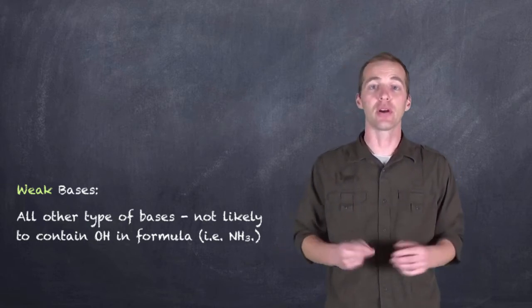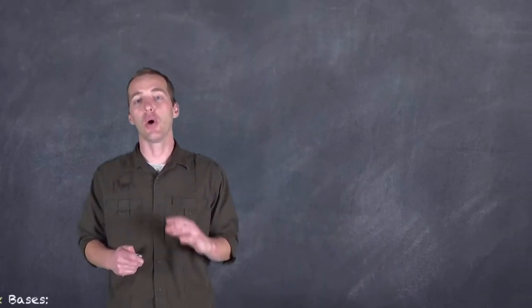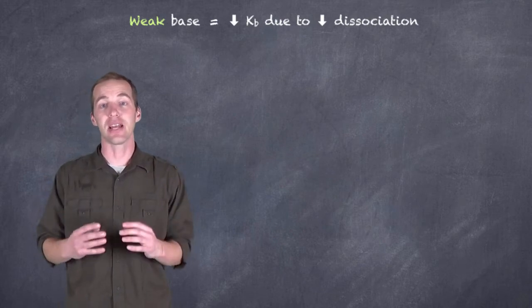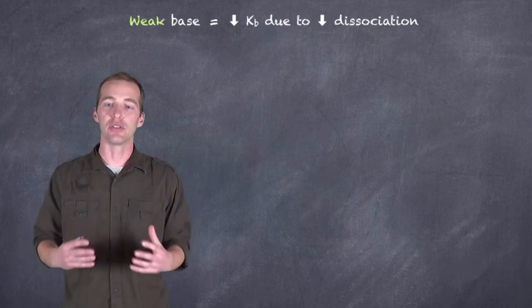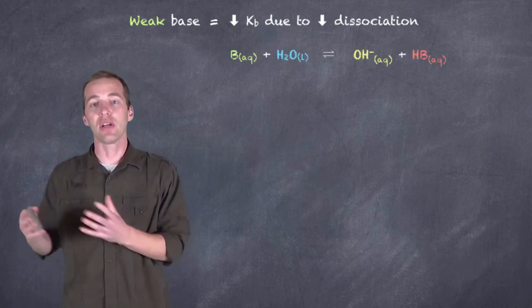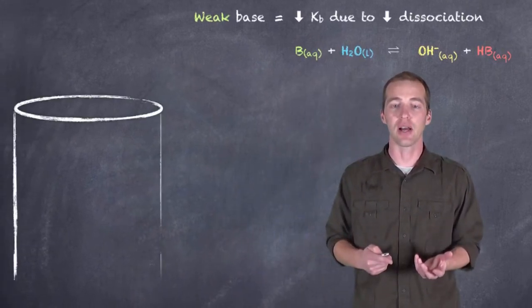The most common one probably that we are going to deal with at this point being ammonia. So a weak base has a really low Kb, and that's due to this low dissociation. Similar to the weak acids that had a low ionization, these weak bases have a low dissociation.